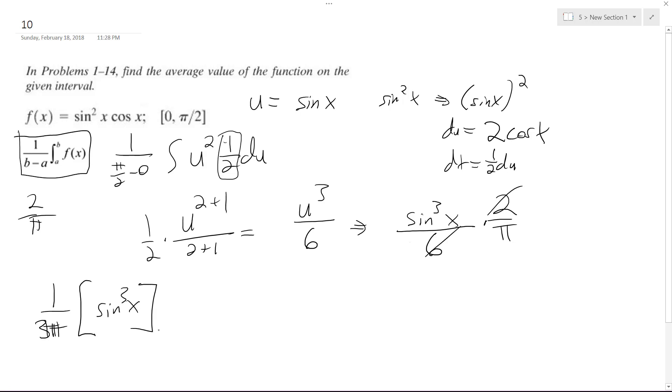And we're going from 0 to π/2. So it's going to be 1 over 3π, and then sine of π/2 is 1. So that would be 1 cubed minus sine of 0, which is nothing.